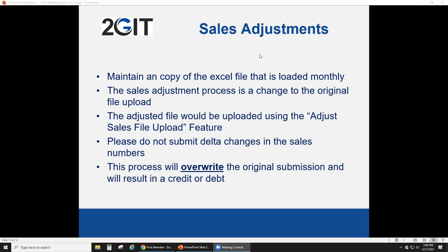The sales adjustment process is a change to the original file upload — and critically, do not submit deltas for sales numbers. If you've reported $100,000 and you find an additional order worth $1,000, don't upload a file for just that $1,000. The reason is it's a complete overwrite of your original submission. You need to upload $101,000 — all records — because it wipes out the original and replaces it entirely. It is not a delta change; it is a complete overwrite.